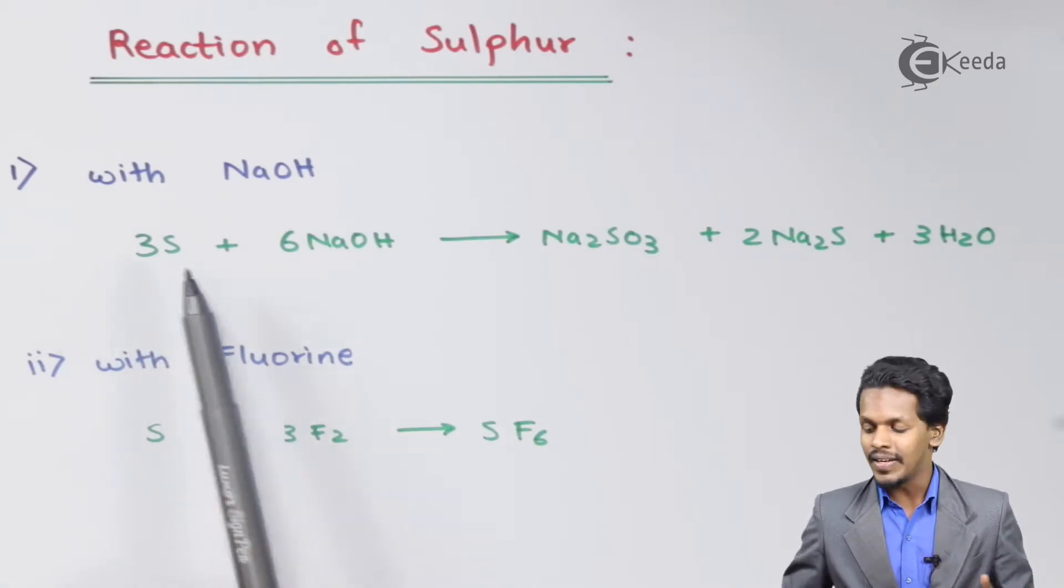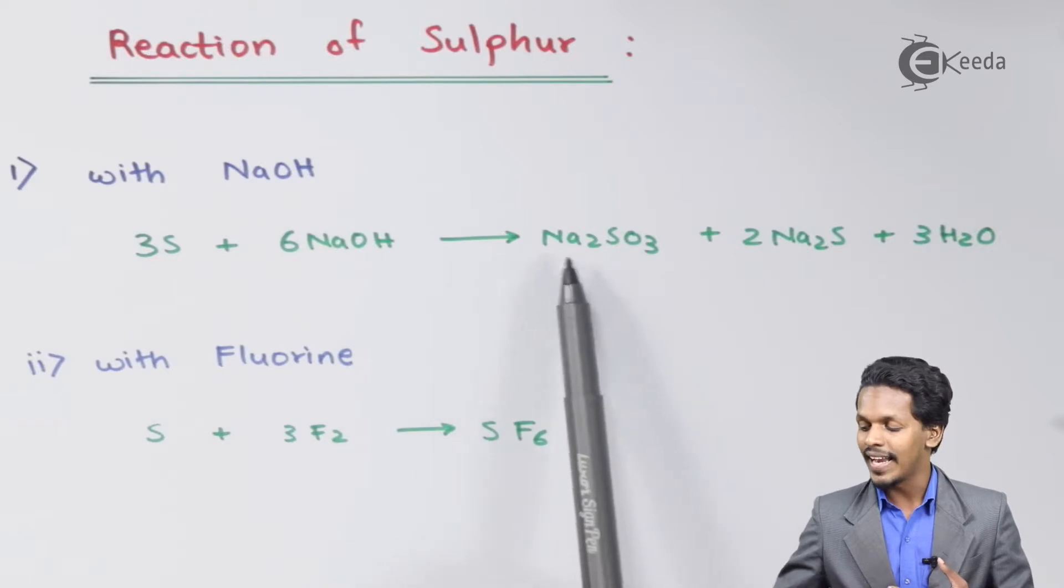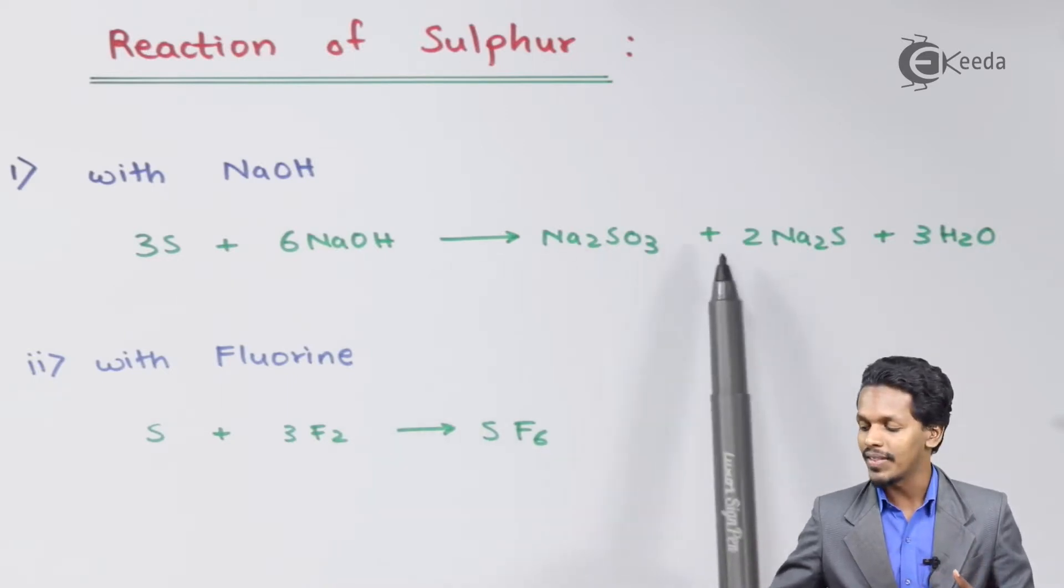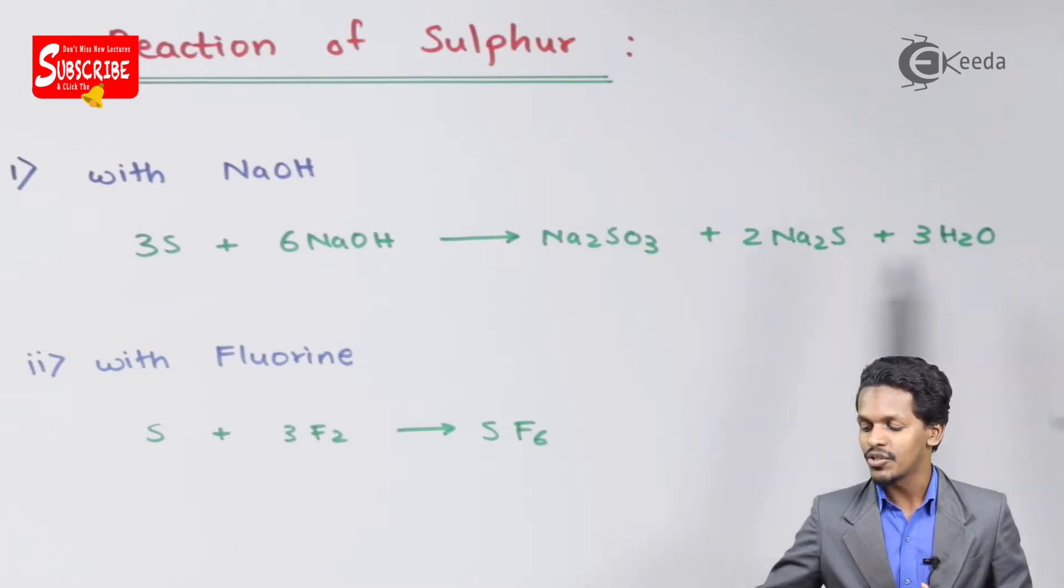So when 3 moles of Sulphur is reacted with 6 moles of NaOH, then the products that are formed are basically Na2SO3, that is sodium sulfate, along with 2 moles of Na2S, that is sodium sulfide, along with 3 moles of H2O.